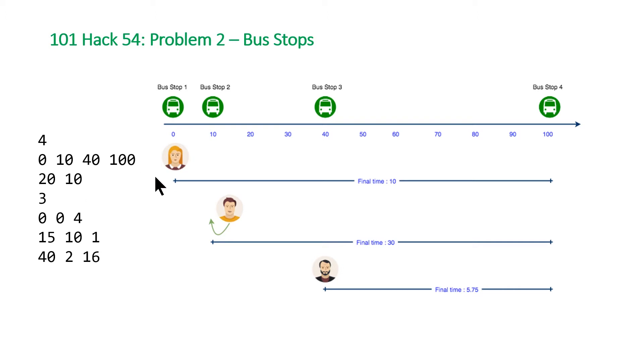The second number is the time at which they start. So the first individual will start right away but the second individual will start at time 10. And the last number for each of these individuals is the speed at which they can walk.